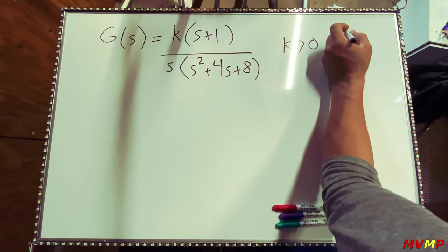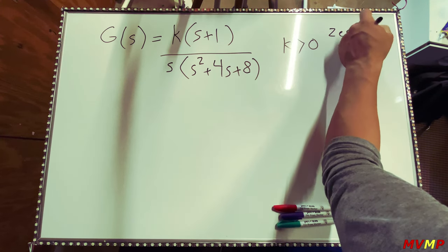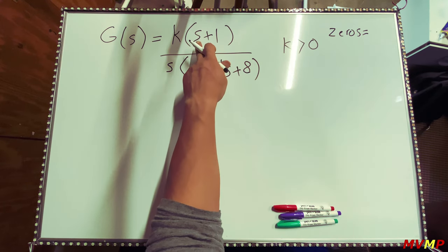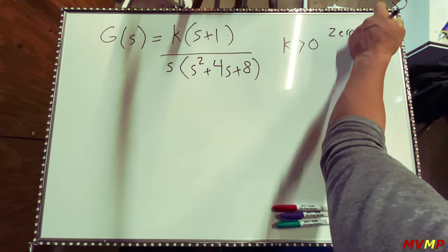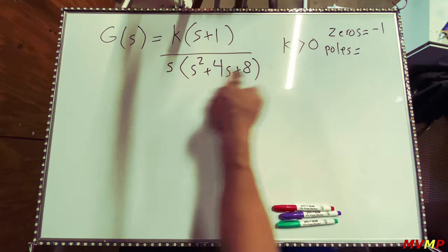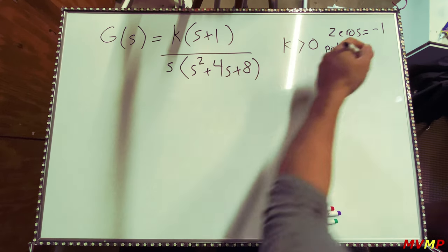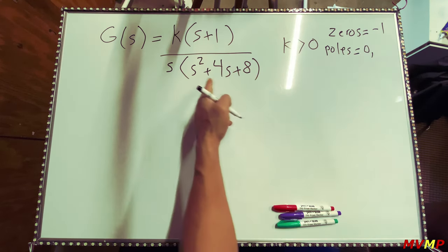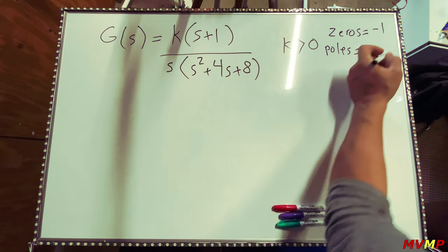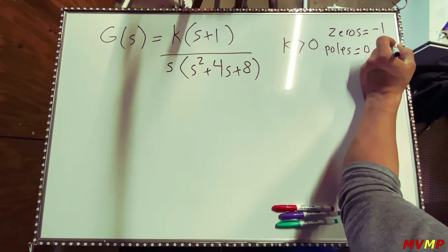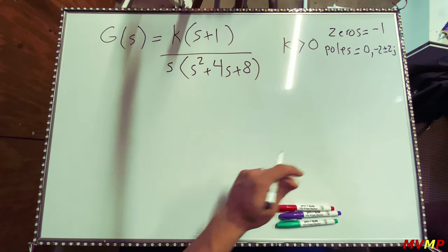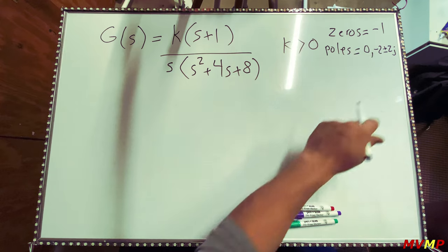First, define the zeros — zeros are what's on top, and this is when s equals negative one, so we have one zero. For poles, since there's an s on the outside, one of them is at zero, and then you apply the quadratic formula to get complex conjugates of minus two plus/minus two j. So we have a total of three poles and one zero.